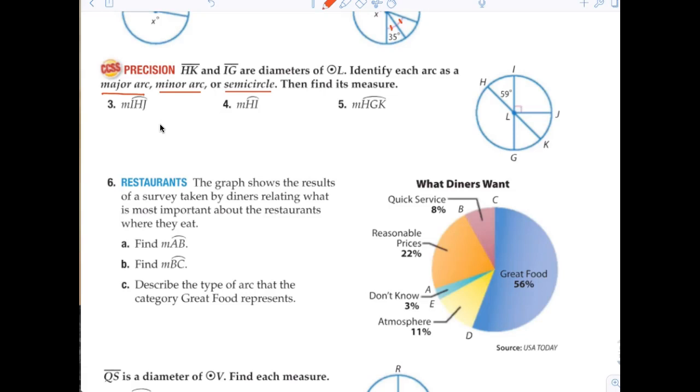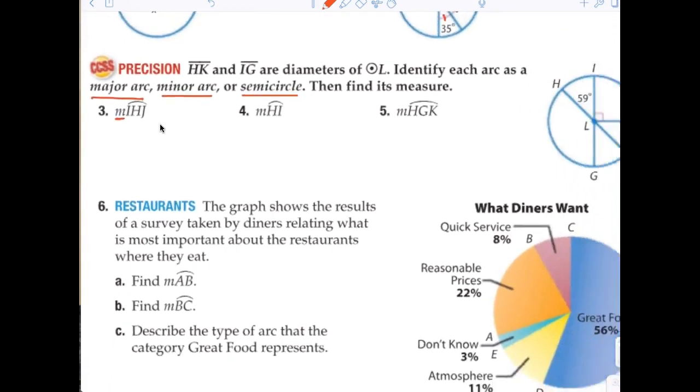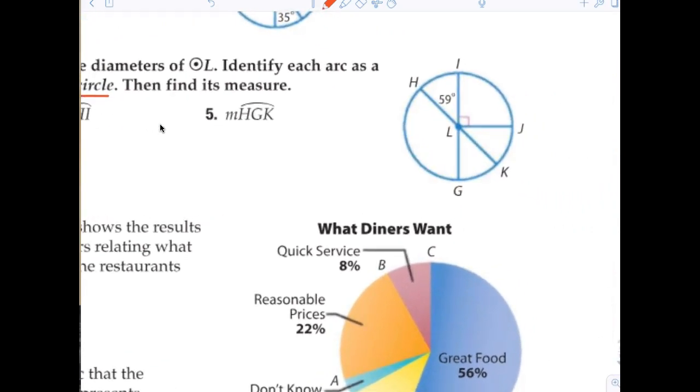So now, I want to talk to you about how they identify, for example, question three. M is talking about the measure of arc I, H, J. The reason why we just don't call it arc I, J, is because it could be referencing that. But because they call it I, H, J, that is your clue that you're going all the way around the outside of the circle. Generally, a semi-circle or a major arc is written with three letters.